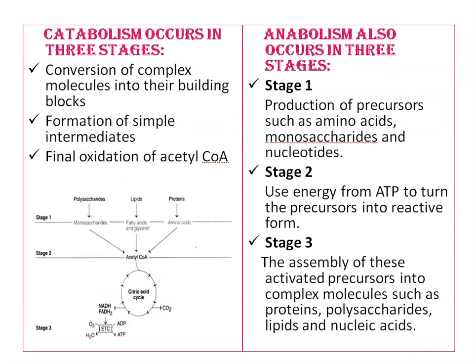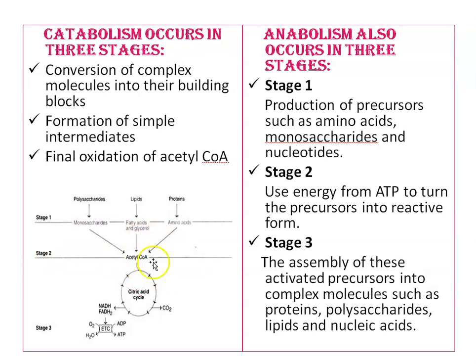Catabolism occurs in three stages. First is the conversion of complex molecules into their building blocks, meaning into simple molecules. The second stage involves the formation of simple intermediates. And finally, oxidation of intermediate compounds.